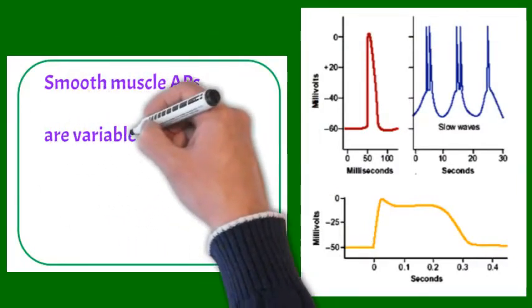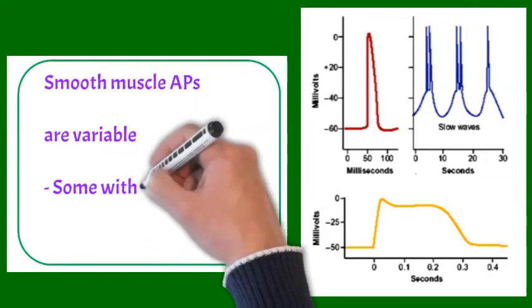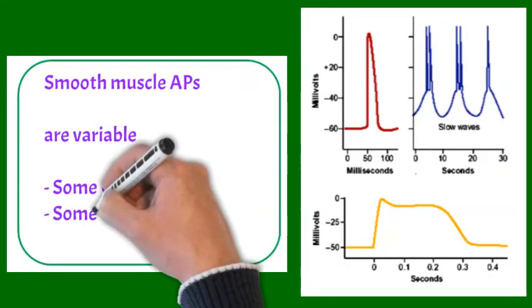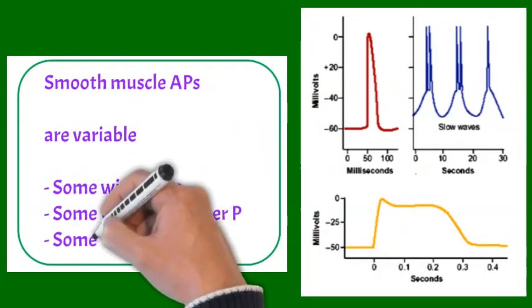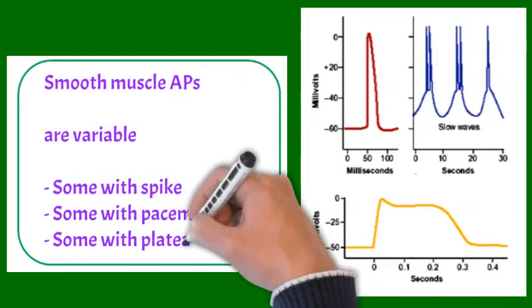While in the smooth muscle, all types of action potential are present. Some smooth muscle with spike potential, some with pacemaker potential, and some with plateau, as we can see in the figure.